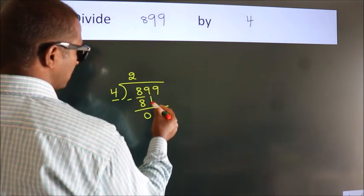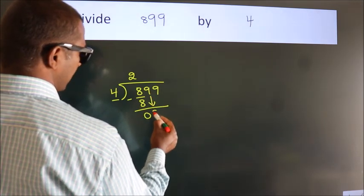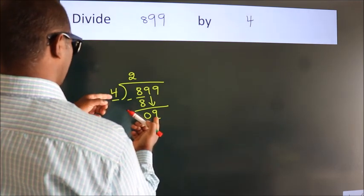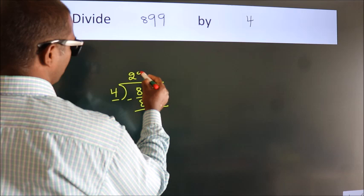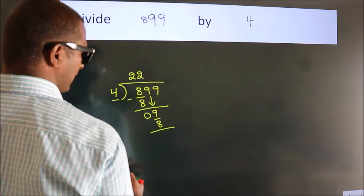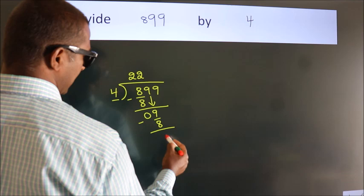After this, bring down the beside number. So, 9 down. So, 9. A number close to 9 in 4 table is 4 twos, 8. Now, we subtract. We get 1.